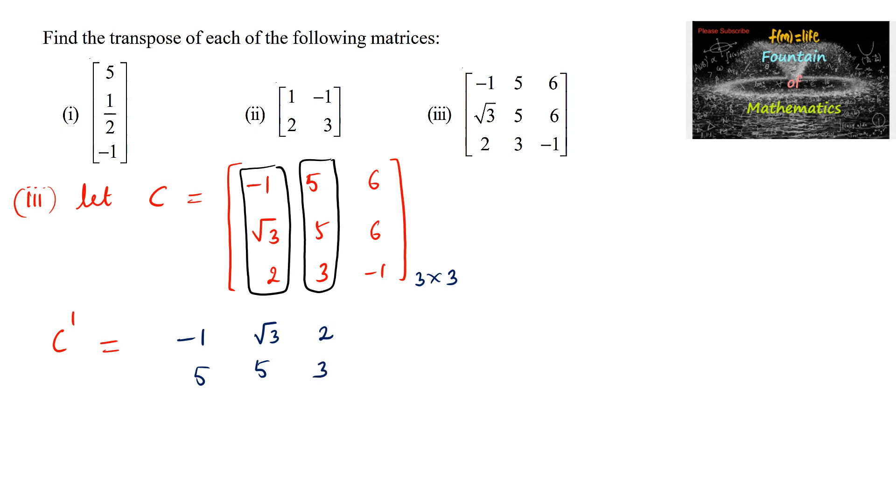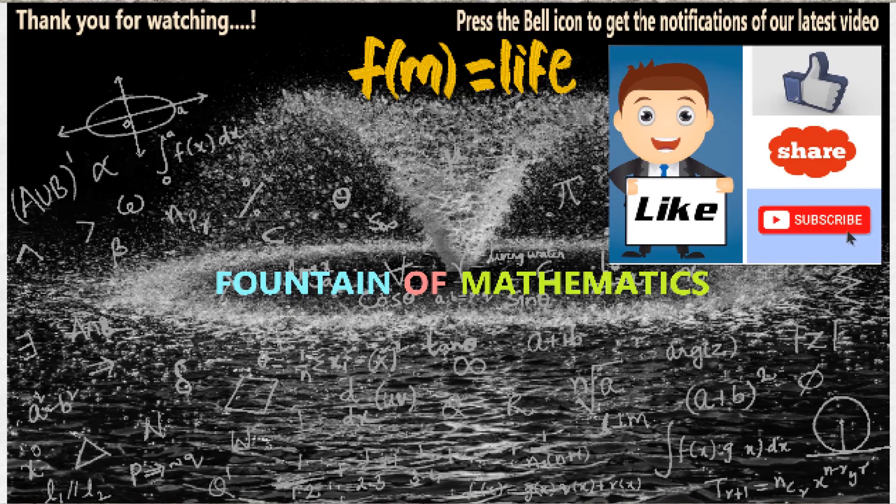And the third column can be taken as the third row, that is 6, 6, and minus 1. So just interchanged the columns with rows. So here order is 3 by 3. So C transpose is equal to negative 1, root 3, 2, 5, 5, and 3, 6, 6, and minus 1. Okay. Thank you.